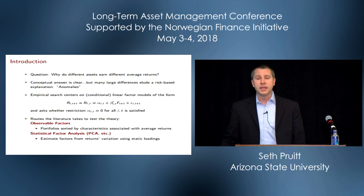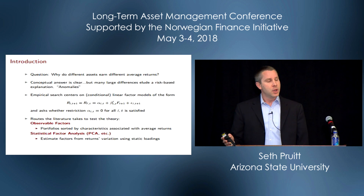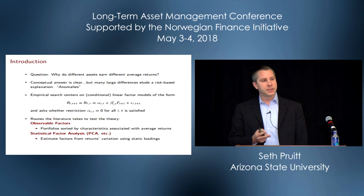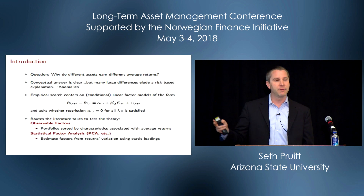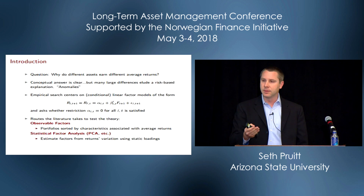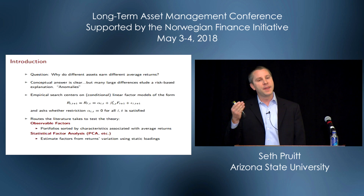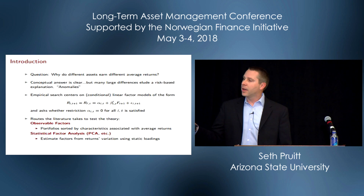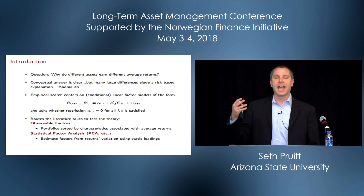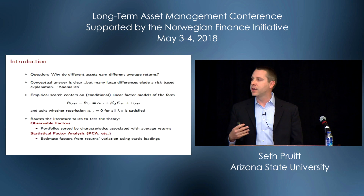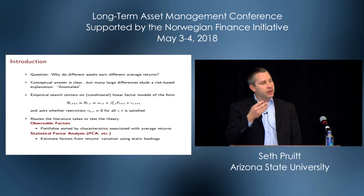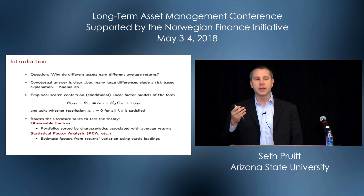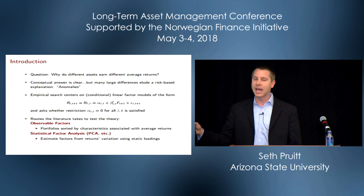There are two broad ways the literature has tested this theory. The first is to use observable factors — sorting stocks based on observable characteristics associated with average returns, such as SMB, HML, or momentum. The other is a purely statistical factor analytic approach. Ever since Chamberlain and Rothschild's 1983 Econometrica, the APT says aggregate risk factors should be responsible for most of the common variation in stock returns.